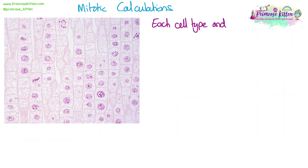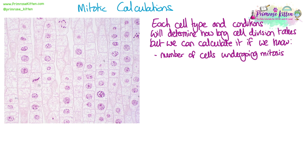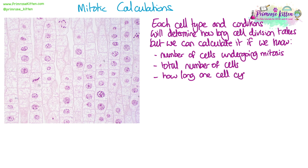Mitotic calculations. Each cell type and conditions will determine how long cell division takes, but we can calculate it if we know: the number of cells that are undergoing mitosis (which we can count from a diagram or be given in a table), the total number of cells, and how long one cell cycle takes in terms of time. From that information, we can work out how long cell division or even a specific stage of mitosis takes.